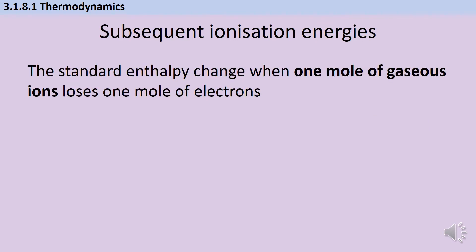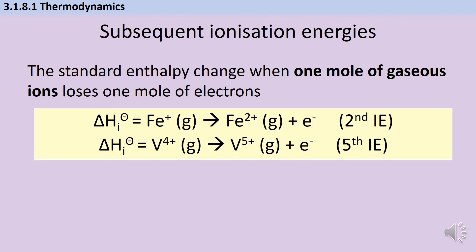After the first ionization energy come the second, third, fourth, and however many there are. In each instance we're just removing one electron and increasing the charge by one. So for the second ionization energy of iron we go from Fe⁺ to Fe²⁺ with loss of an electron, and for the fifth ionization energy of vanadium we go from V⁴⁺ to V⁵⁺. The important thing is that we're only ever removing one electron — it's always one electron at a time.